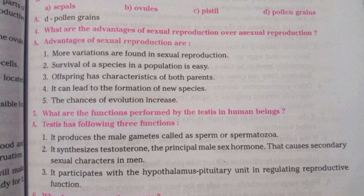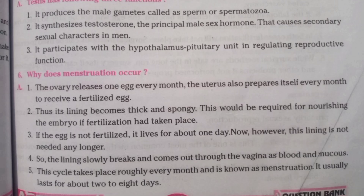First, it produces the male gamete called sperm or spermatozoa. Second, it synthesizes testosterone, the principal male sex hormone, that causes secondary sexual characters in humans. Third, it participates with the hypothalamus and pituitary unit in regulating reproductive function.